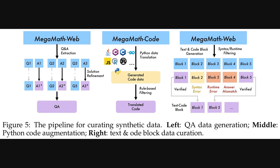We just saw how they built the MegaMath Code dataset using filtering. Figure five shifts focus to the synthetic part — MegaMath Synth. It actually shows three separate pipelines for creating this synthetic data. On the left, they take web data, extract question-answer pairs, and then use LLMs for solution refinement. In the middle, they take the non-Python code, translate it to Python using LLMs, and apply some filtering. And on the right, they generate interleaved text and code blocks from web data, and importantly, filter those blocks based on verification — like checking for runtime errors — to ensure quality.